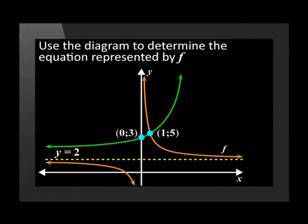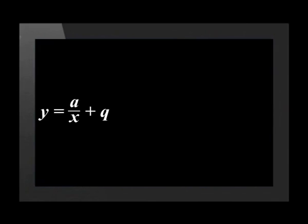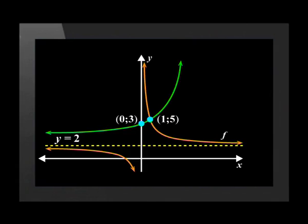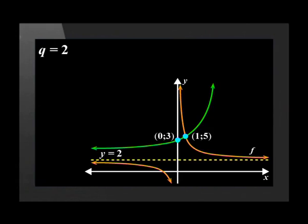Let's try another one together. Use the diagram to determine the equation represented by f. Step 1: write down the standard form of the function. This is a hyperbola, so the standard form is y equals a over x plus q. Remember that x appears in the denominator. Step 2: check if the values of a or q are given in the diagram. Remember that q is the same value as the horizontal asymptote, which means q equals 2. Substituting: y equals a over x plus 2.